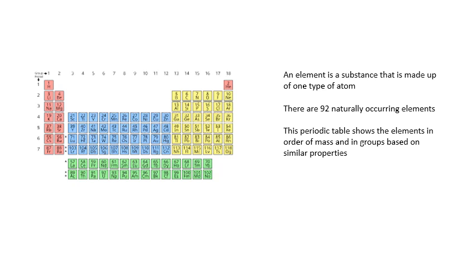Hydrogen, helium, lithium, beryllium — in order of mass. And then they are in group 1, group 2, etc., based on properties.